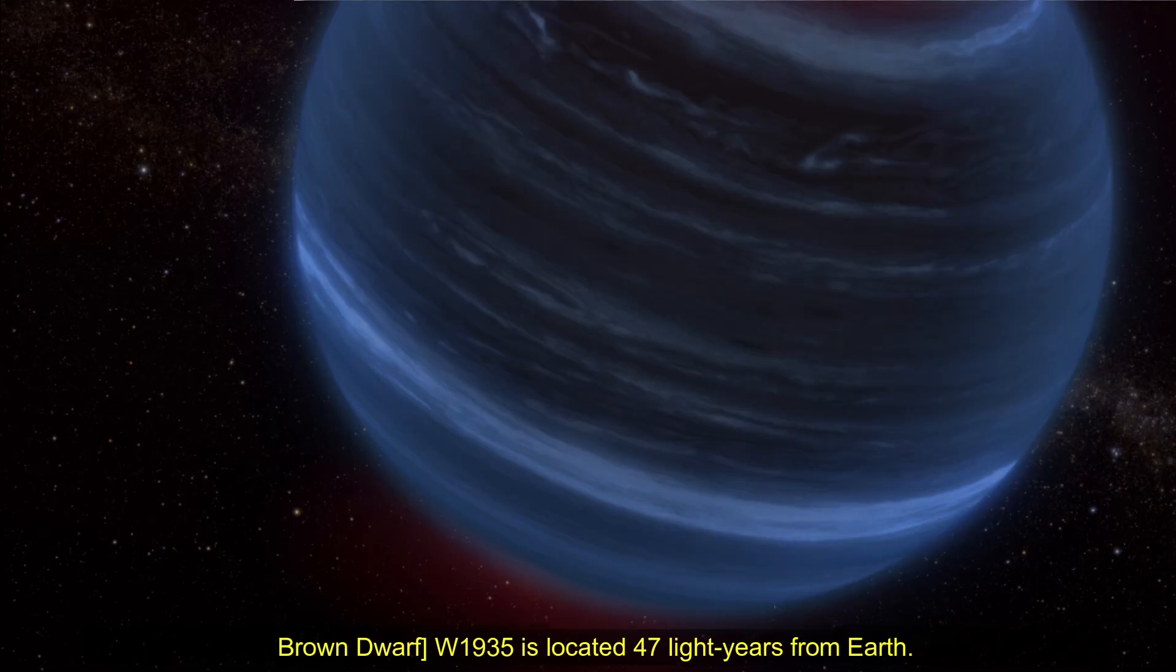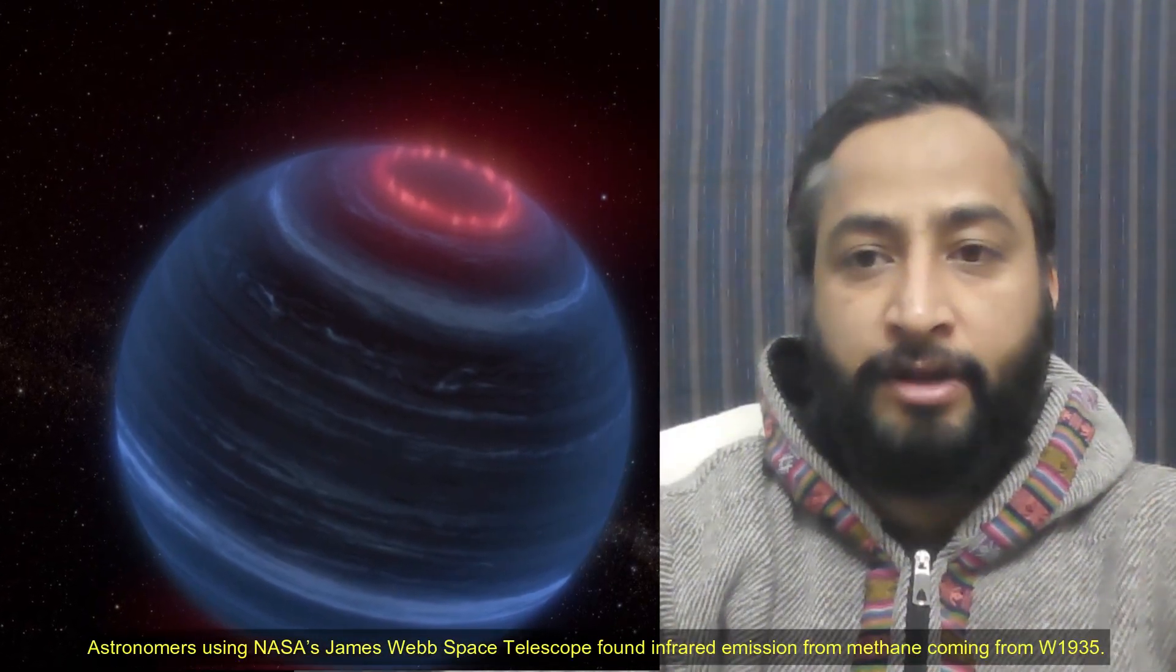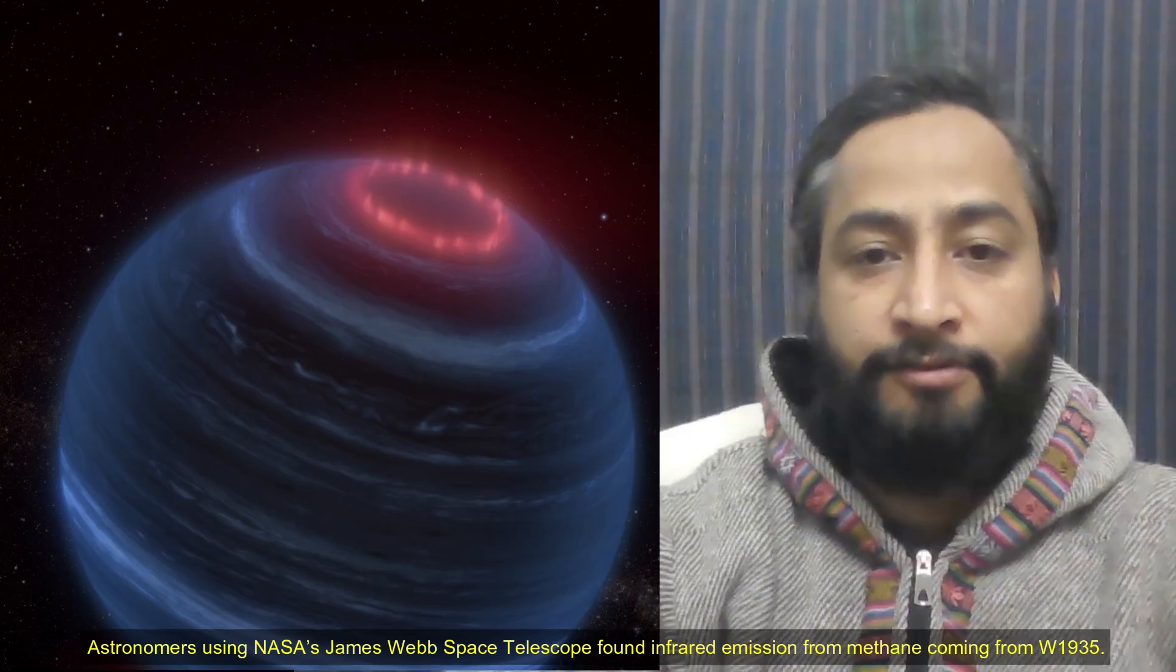Astronomers using NASA's James Webb Space Telescope found infrared emission from methane coming from W1935.